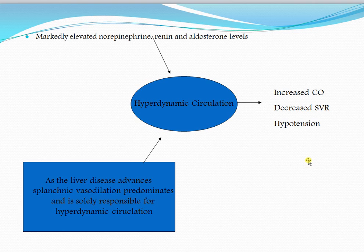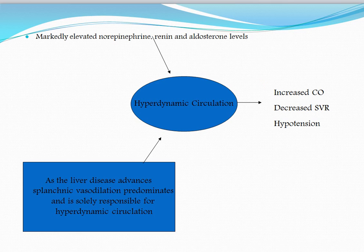The markedly elevated norepinephrine, renin, and aldosterone levels lead to hyperdynamic circulation. As liver disease advances, splanchnic vasodilation predominates and becomes the main cause of hyperdynamic circulation. In later-stage cirrhosis, splanchnic vasodilation predominantly causes hyperdynamic circulation, resulting in increased cardiac output, decreased SVR, and hypotension.